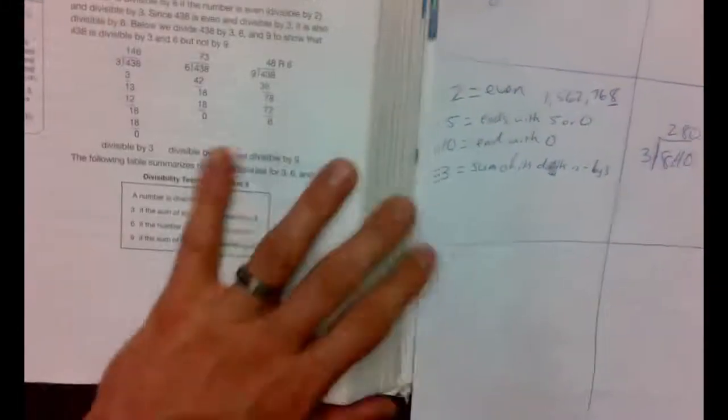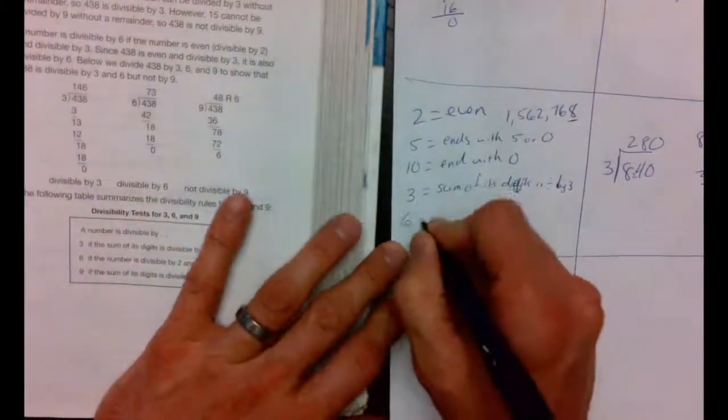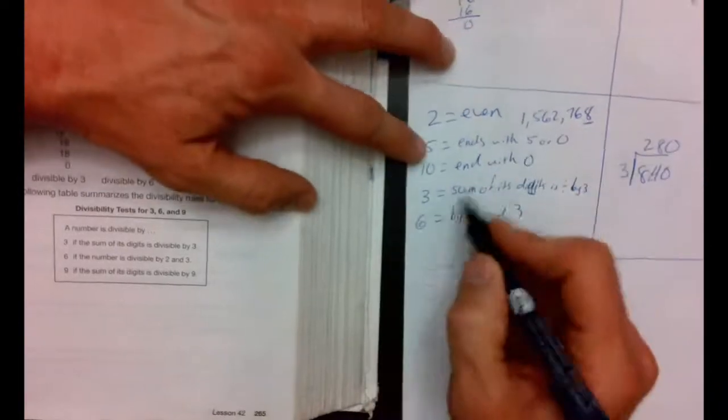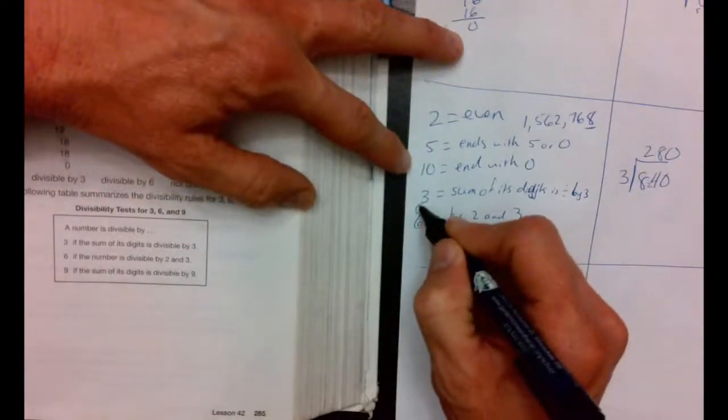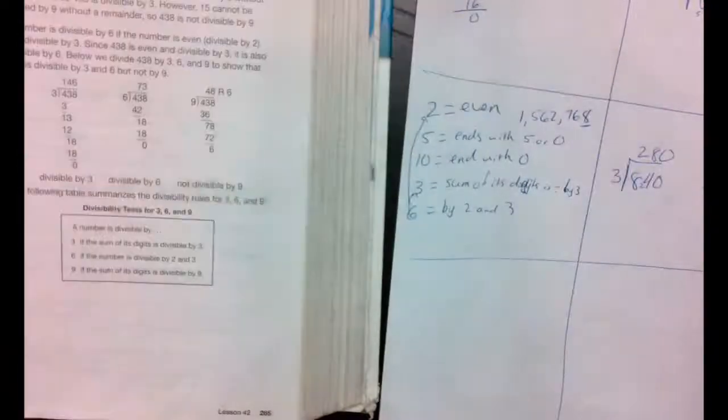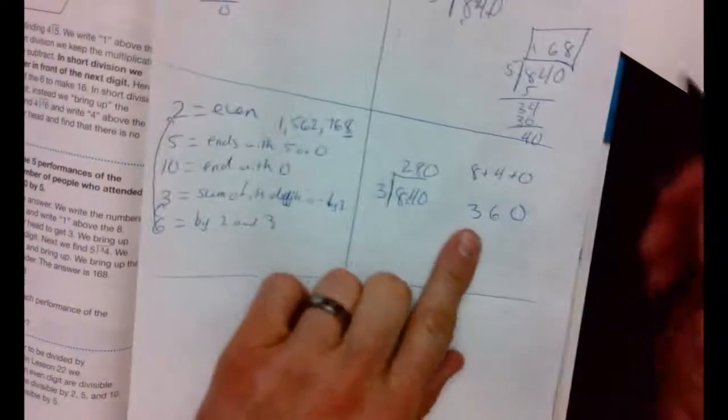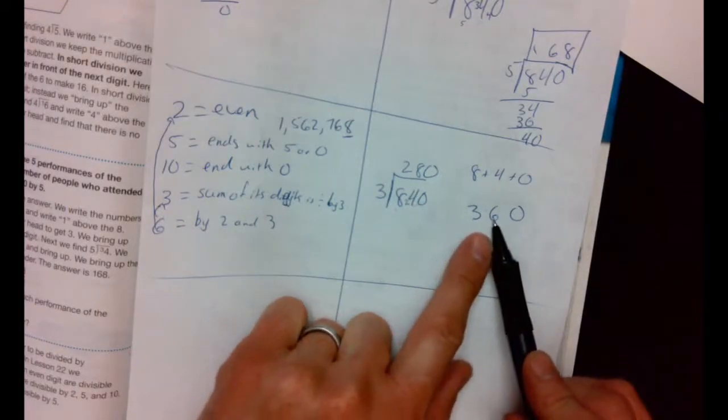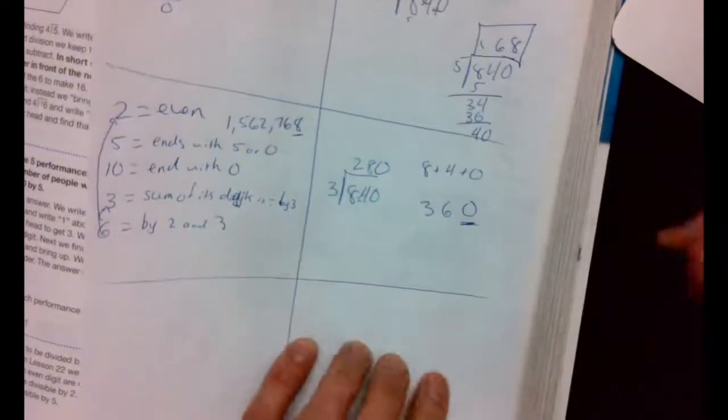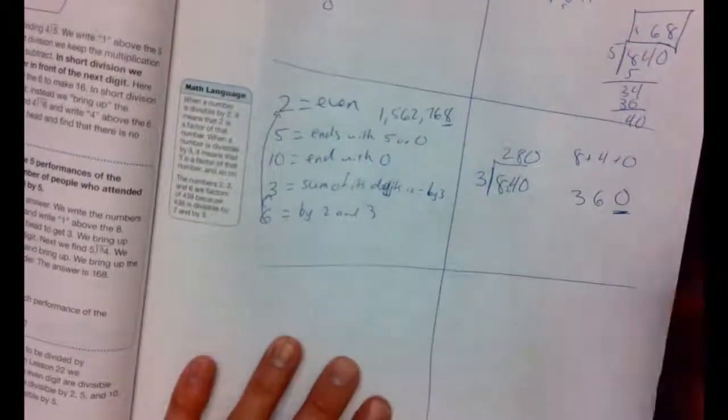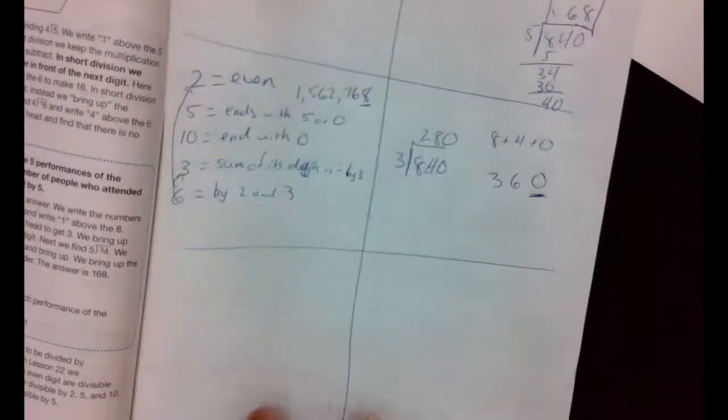Let's move on to 6. 6 has kind of got a cool rule. To be divisible by 6, it needs to be divisible by 2 and 3. In other words, to be divisible by 6, you have to follow the 3 rule, and you've got to follow the 2 rule. Now, would this one be divisible by 6? Well, 3 plus 9. That 3 plus 6 is 9, and that's divisible by 3. And it ends with a 0, so it's even. So this would be divisible by 3 and by 2. Therefore, it would also be divisible by 6.